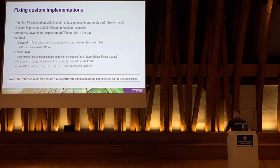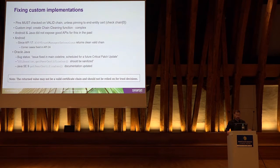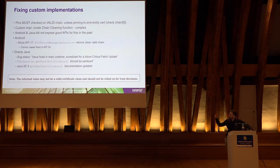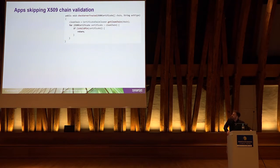In the Oracle Java world, there was a bug raised about this. It's fixed in the main code line and they were waiting for a CPU update. The fix will be that getPeerCertificates returns the sanitized list instead of what the server sends. Until then, Java 9 documentation includes a note on that last line stating that whatever this API returns will not be used for trust decisions like pinning.